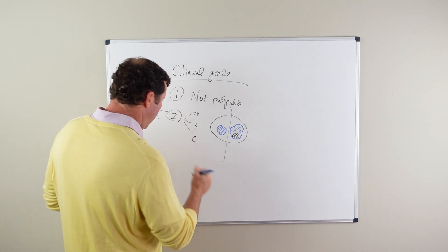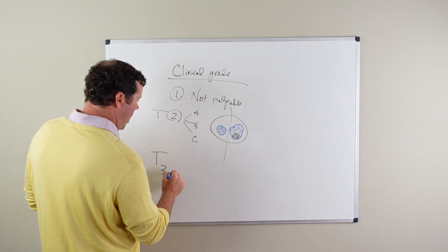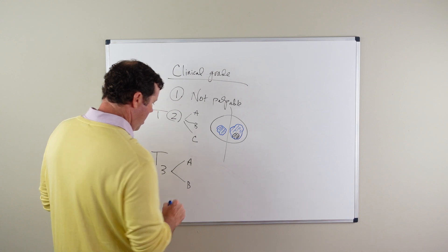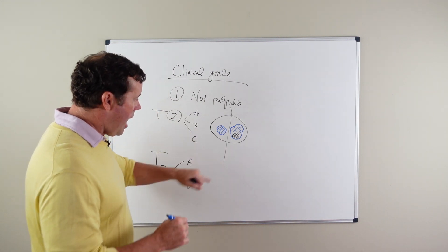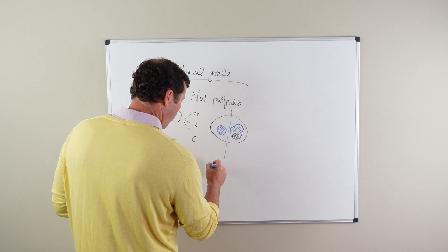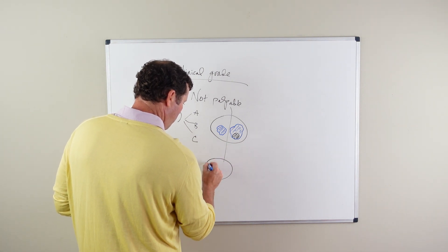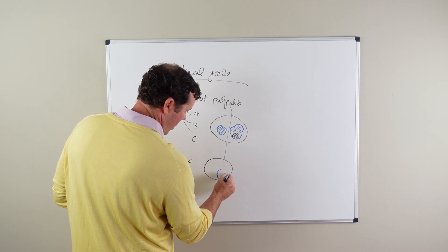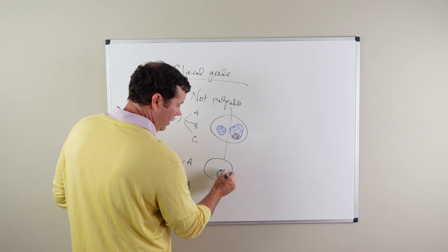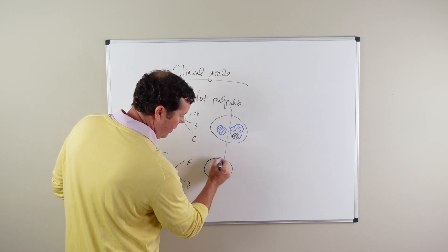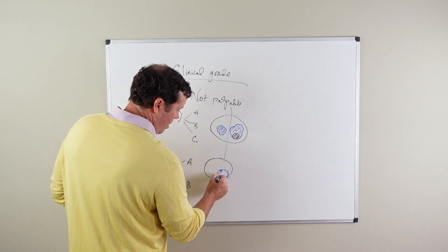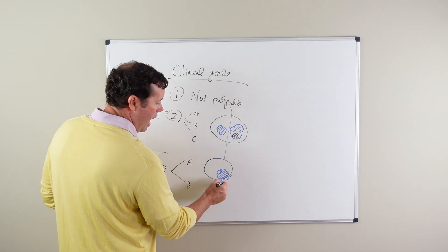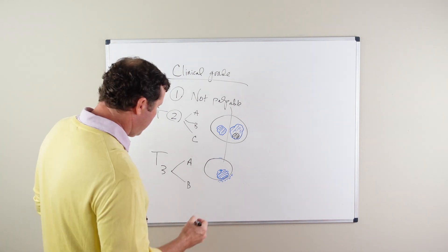Then we get into T3 cancers, and these are split into A and B. T3A cancers have escaped outside of the covering of the prostate called the capsule. So there's cancer in the prostate that is palpable outside of that capsule.